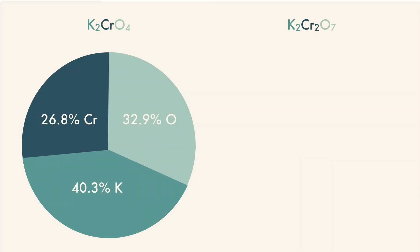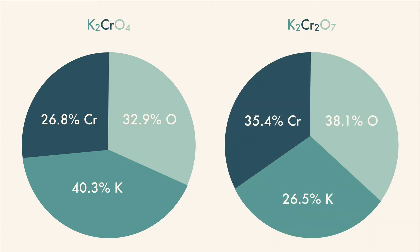Here are two different compounds with the same atoms in them: potassium, chromium, and oxygen. The percent composition for each of them is different, even though they're made of the same building materials.